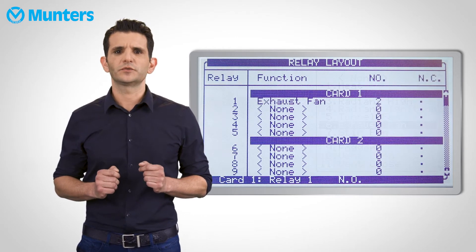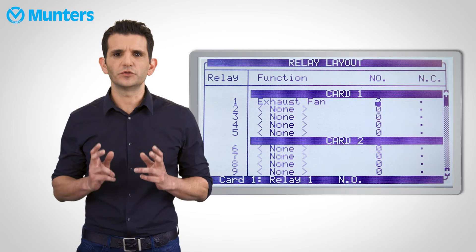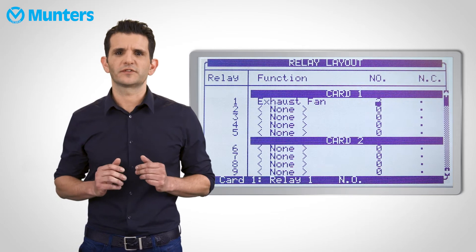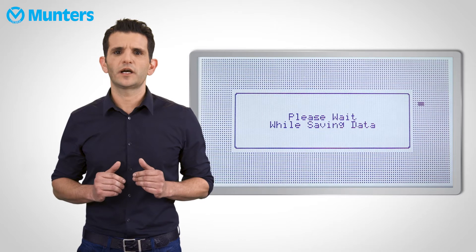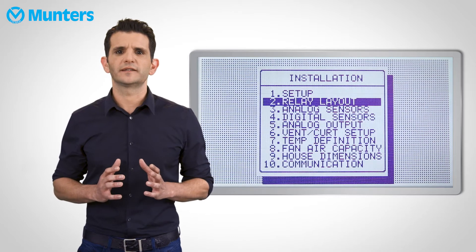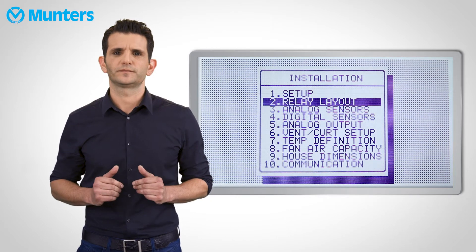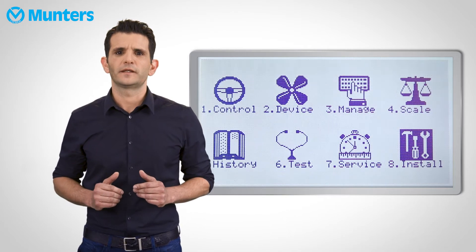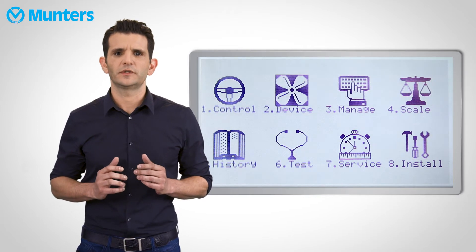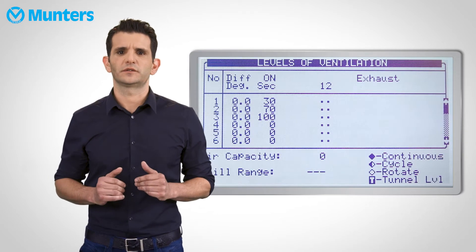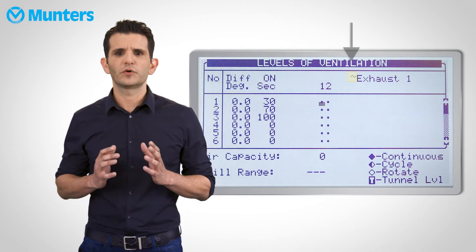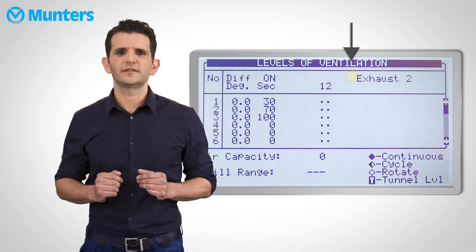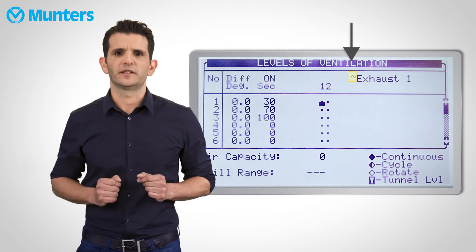You will see that you can only start with Exhaust Fan 2, because Exhaust Fan 1 is already defined. Now let's see how it looks in the Levels of Ventilation table. Navigate back to Device menu and select Levels of Ventilation. When you scroll to Exhaust Fan 1, you will see a small wavy sign.